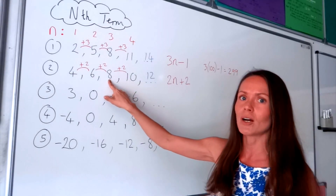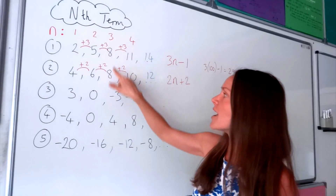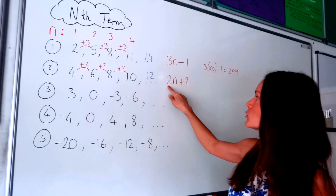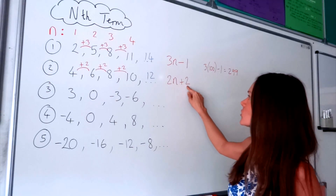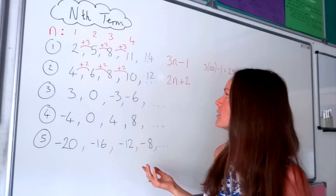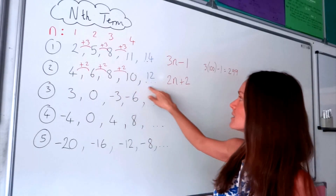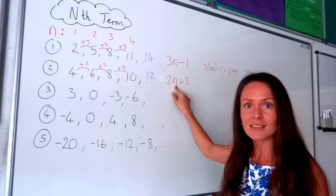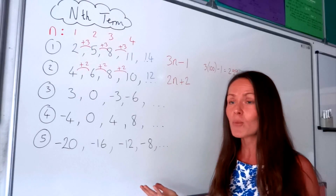Let's take the third number — position number 3, so n is 3. I change that number to 3: 2 multiplied by 3 is 6, and 6 plus 2 gives me 8. So it worked for that number. If I use it for the fifth number, when n is 5: 2 times 5 is 10, and 10 plus 2 is 12, which is the fifth number. So I know it works.